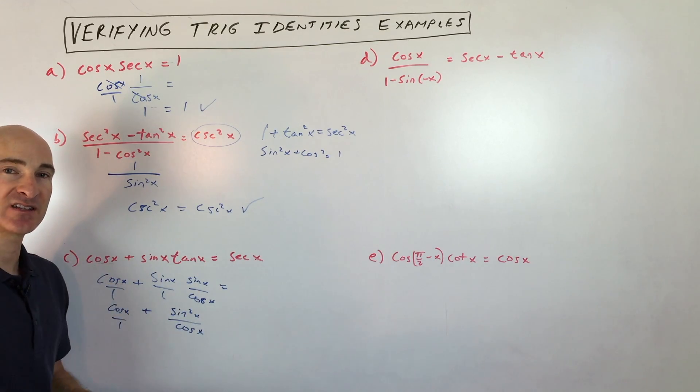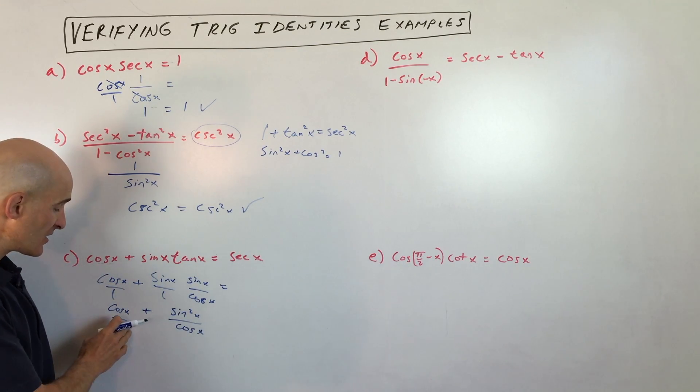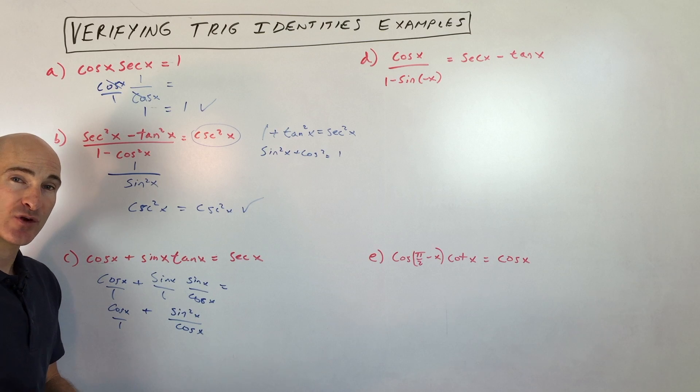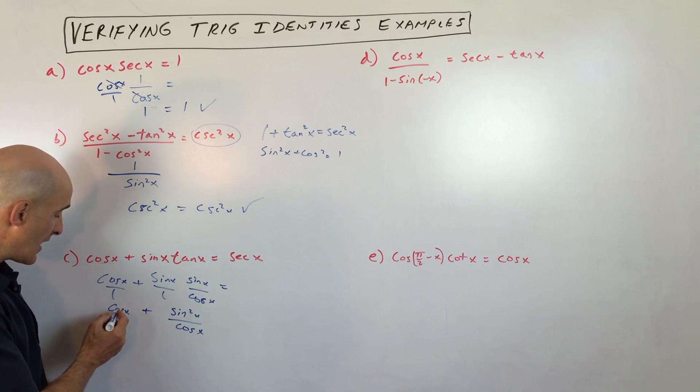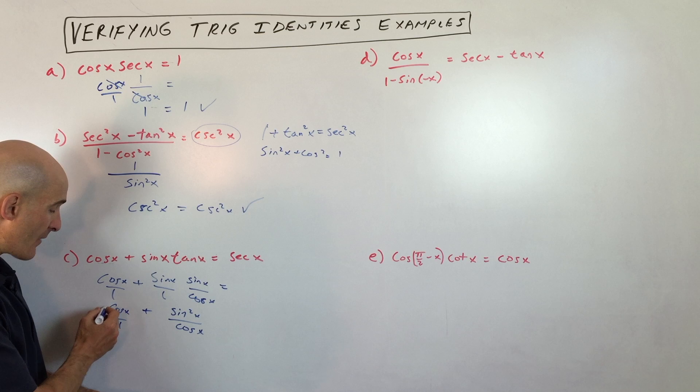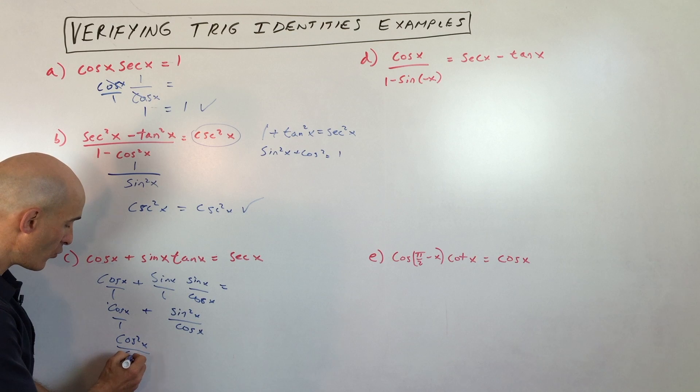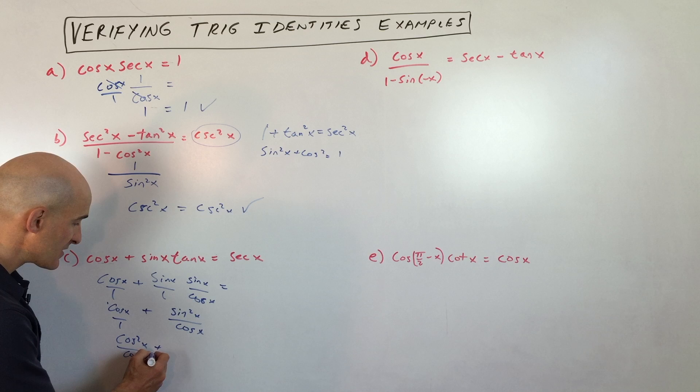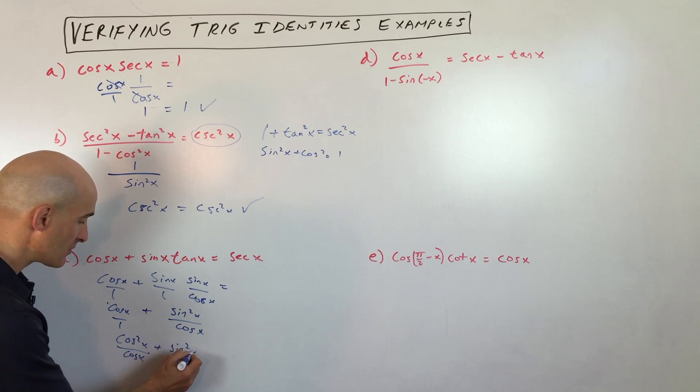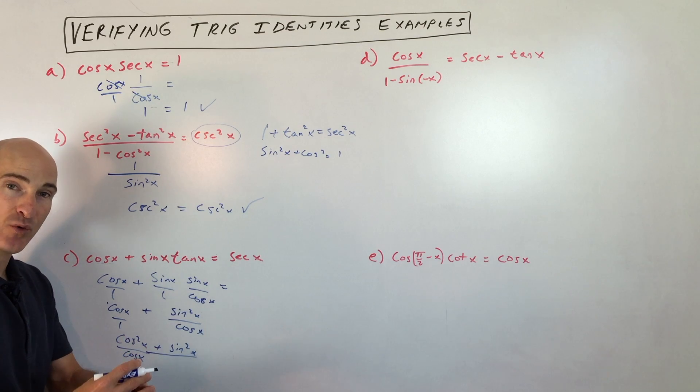So the obvious thing I think to do here would be to get the common denominators. And I'm going to do that by multiplying the numerator and denominator by cosine of x. So if we do that, we're going to get cosine squared x over cosine x plus sine squared x over cosine x. But since they have the same denominator, I'm just going to combine them into one fraction.